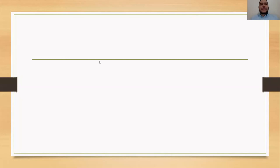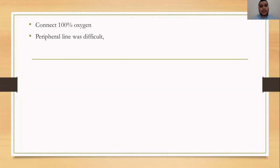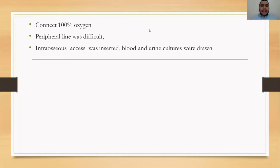Excellent. So the first step is to give 100% oxygen. Now saturation became 94%, and this is acceptable for us. Second step, I'll try to get peripheral line. But unfortunately, peripheral line was very difficult. After three trials of insertion, the next step is IO access — intraosseous access. Excellent. I can see the chat so I'll answer from the chat. IO — excellent. So intraosseous access was inserted.